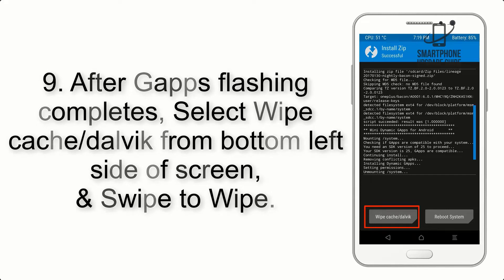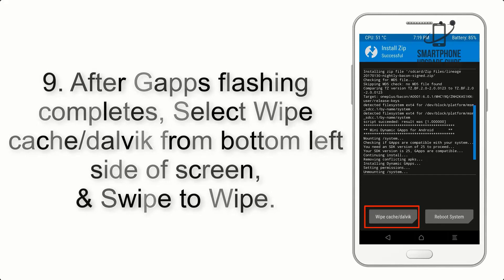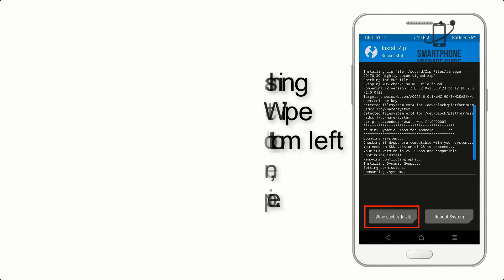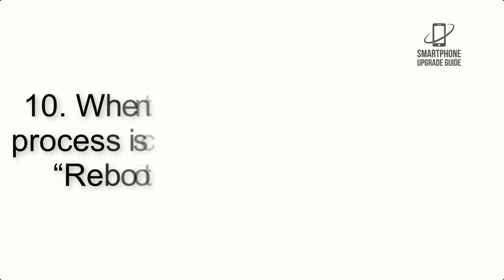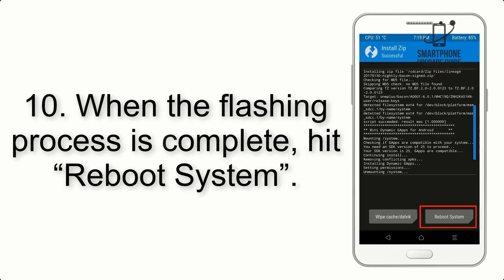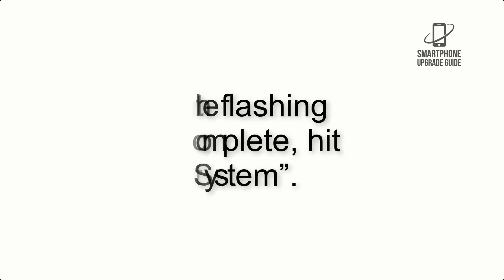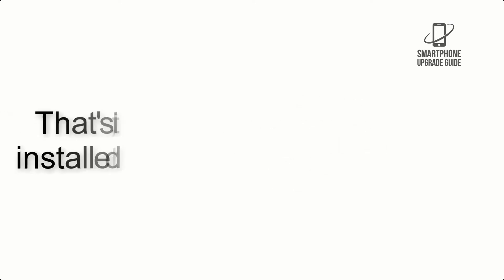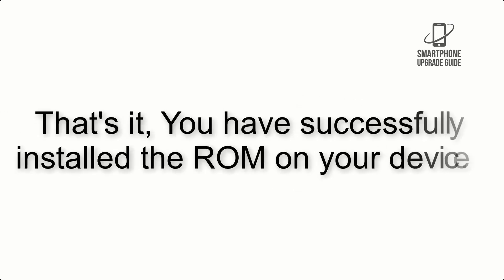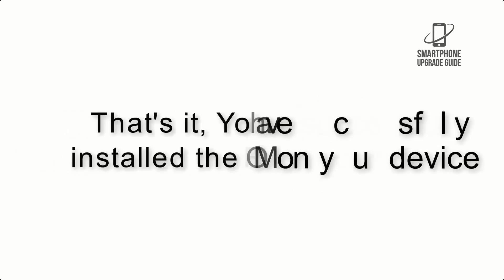Step 9: After GApps flashing completes, select Wipe Cache and Dalvik from the bottom left side of the screen and swipe to wipe. Step 10: When the flashing process is complete, hit Reboot System. That's it — you have successfully installed the ROM on your device.